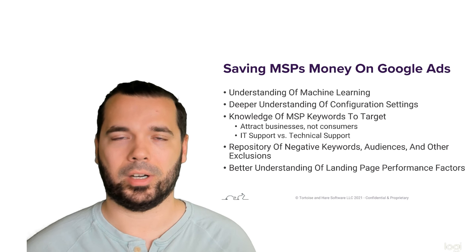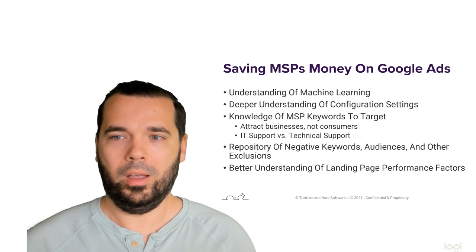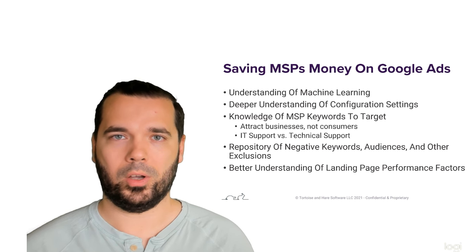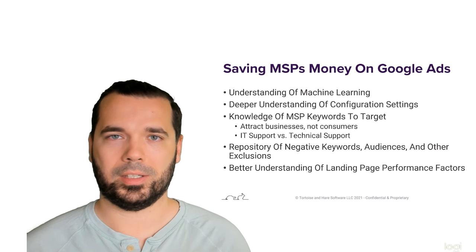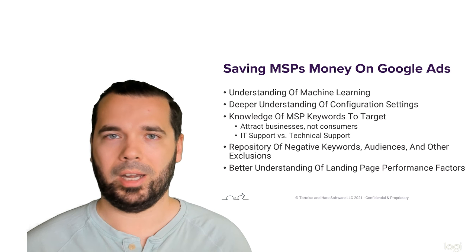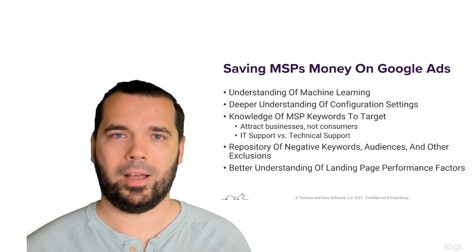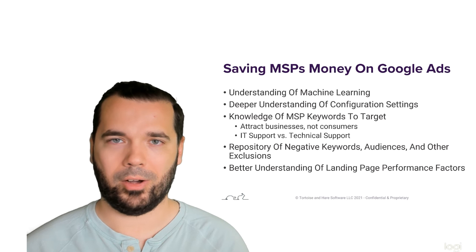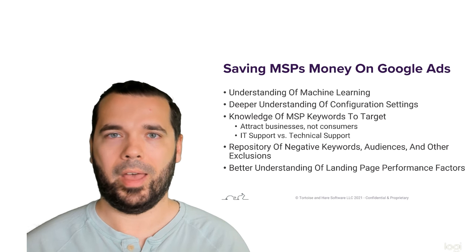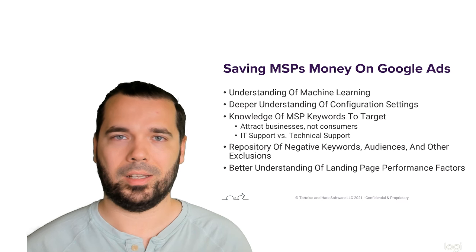If you don't do this from the start, it's going to have a negative impact on your account because you're going to be training the algorithm to target the wrong people. For instance, one of the things I see a lot with MSPs advertising on Google Ads is that they struggle with generating a lot of consumer leads. When you do that, you're training your account and it's going to impact all your campaigns in the future to target those consumers, because the algorithm has been fed data that identifies consumers as the likely target.